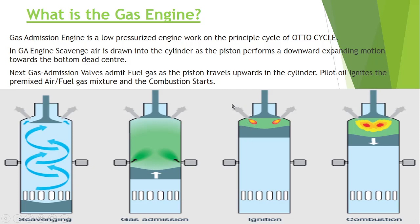The micro booster injection valve is not the primary fuel component — the primary fuel is the gas admitted by the safe gas admission valve. The micro booster only assists ignition. In summary: in a gas admission engine, scavenged air is drawn into the cylinder as the piston moves toward BDC; the gas admission valve admits fuel gas as the piston travels upward; pilot oil then ignites the pre-mixed air-fuel gas mixture and combustion starts.